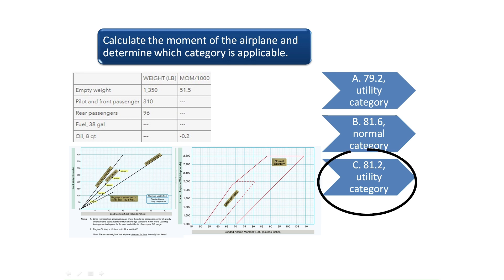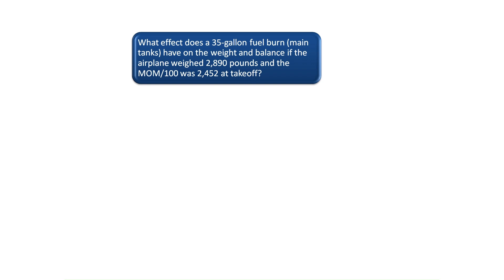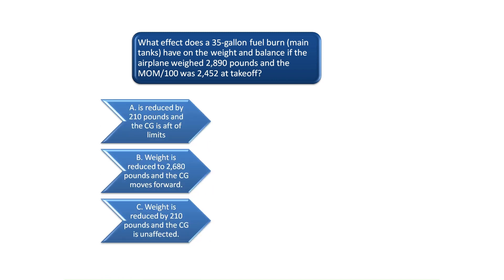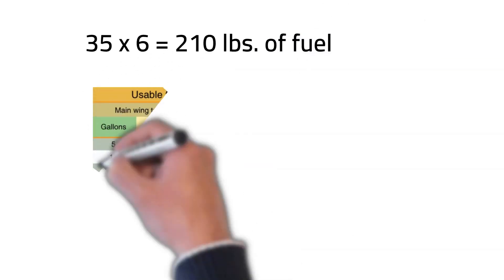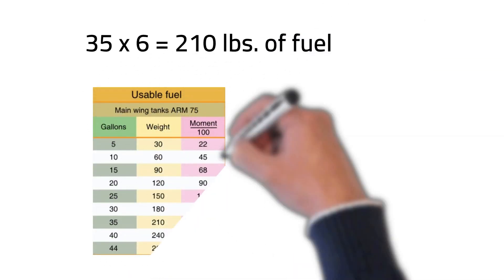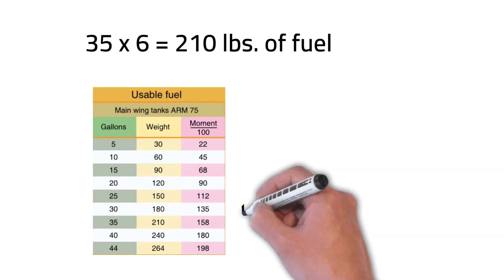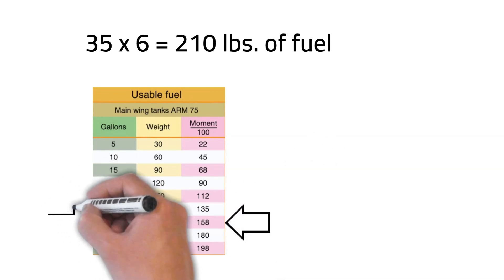What effect does a 35-gallon fuel burn, main tanks, have on the weight and balance if the airplane weighed 2,890 pounds and the moment divided by 100 was 2,452 at takeoff? We know that 35 gallons of fuel weighs 210 pounds since 1 gallon of fuel weighs 6 pounds. You can see from the fuel weight table that the moment for 35 gallons of fuel is 158.